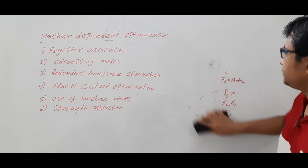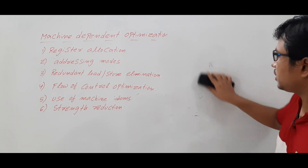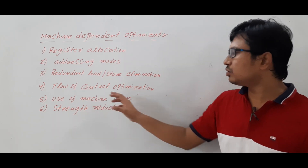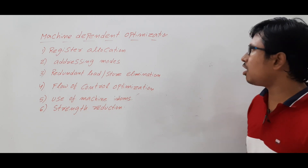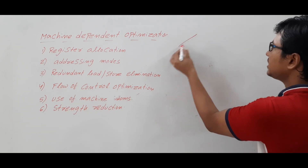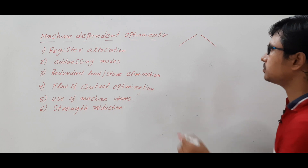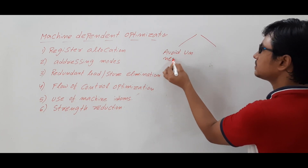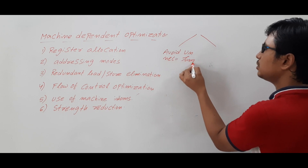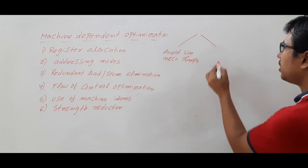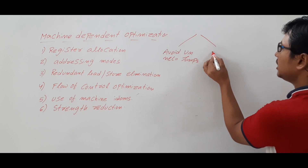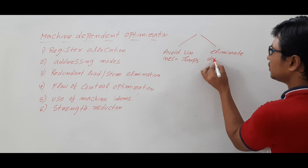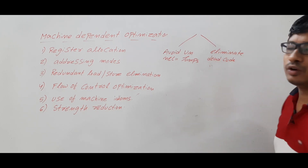Now let me discuss control flow optimization. This is classified into two types: first, avoid unnecessary jumps or go-to statements; and second, eliminate dead code.